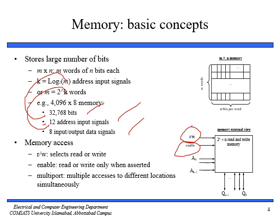For a 2^k × N read and write memory, k is the number of address lines, ranging from A0 to A(k-1). In our case the value of k is 12, so we have address lines from A0 to A11. The input/output data signals run from Q0 to Q(N-1), where N is 8, so the last data line is Q7. That gives us 12 address input signals for accessing words and 8 input/output data signals.